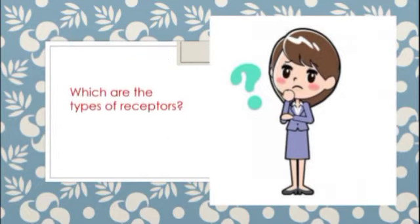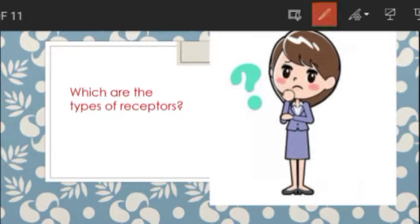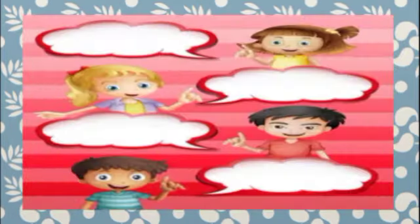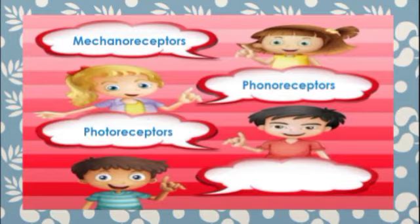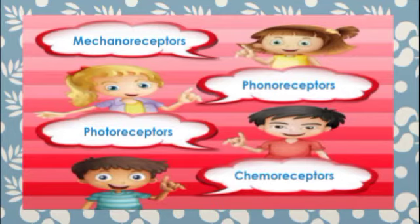The second question is: which are the types of receptors? Basically four types of receptors are there. They are: first, mechanoreceptor — which is in your syllabus. Second is phonoreceptor — also included in your syllabus. Third is photoreceptor — also included in your syllabus. And the last one is chemoreceptor, which is not included in your syllabus, but I will explain it for general information.